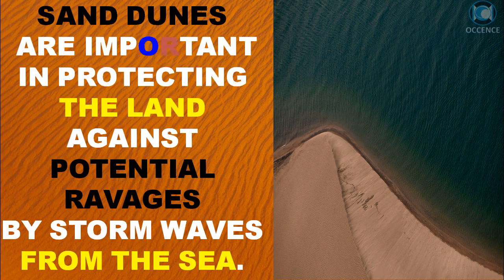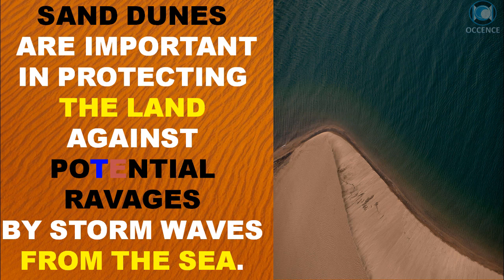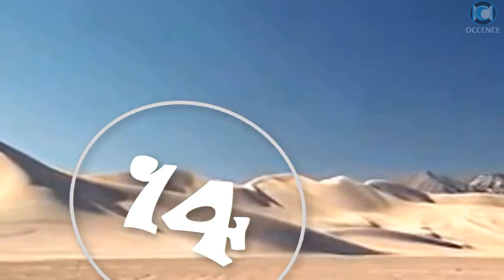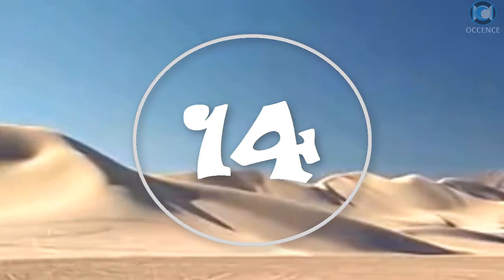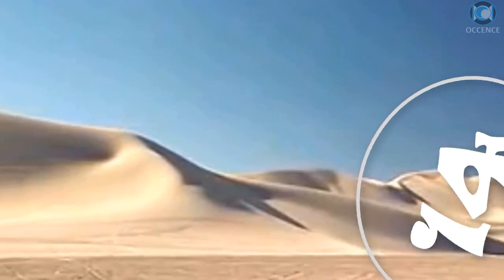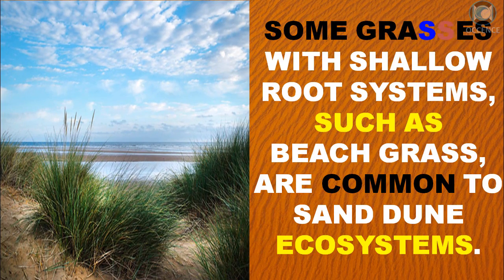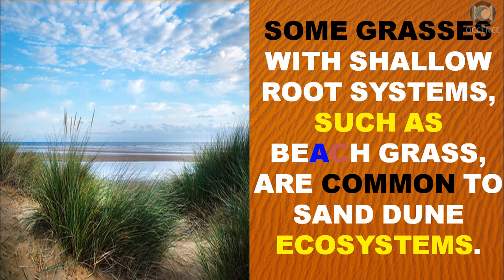Sand dunes are important in protecting the land against potential ravages by storm waves from the sea. Some grasses with shallow root systems, such as beach grass, are common to sand dune ecosystems.